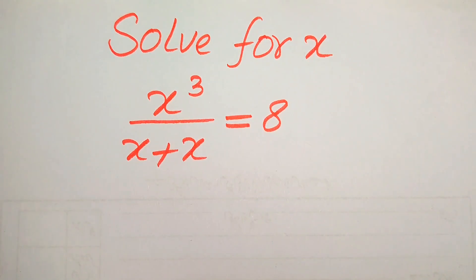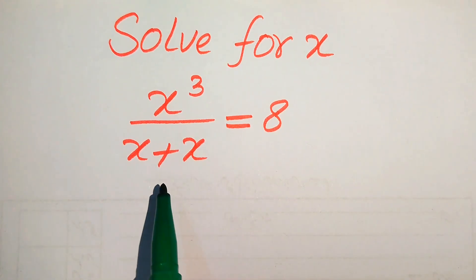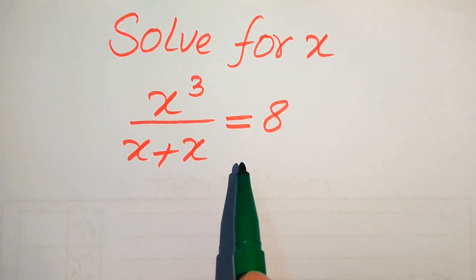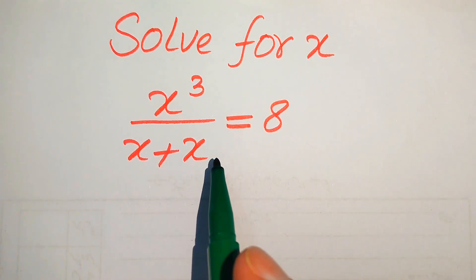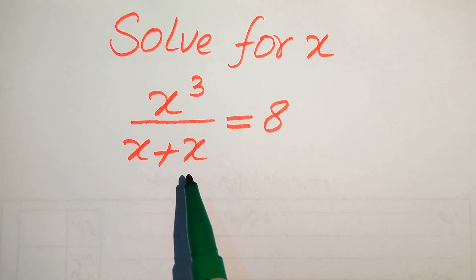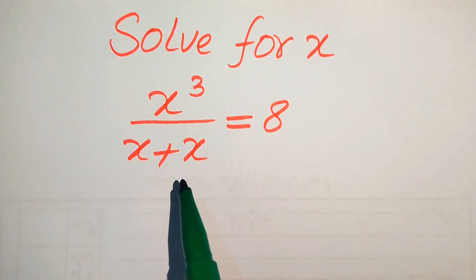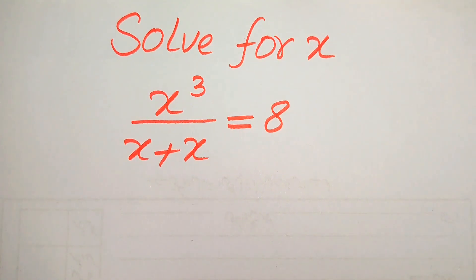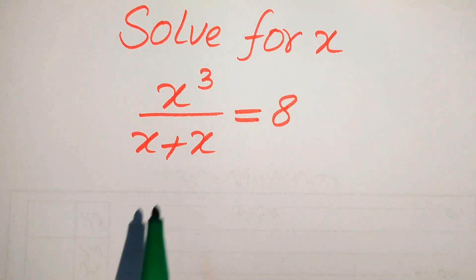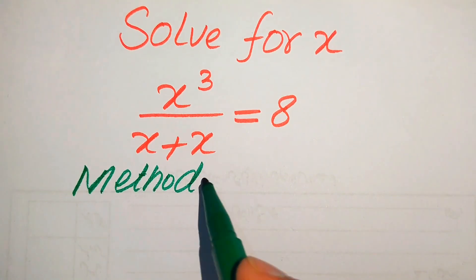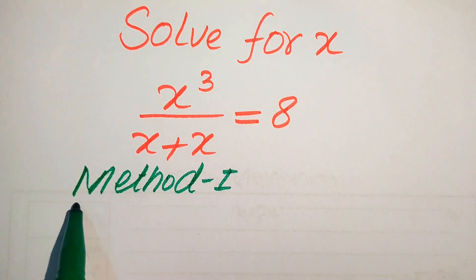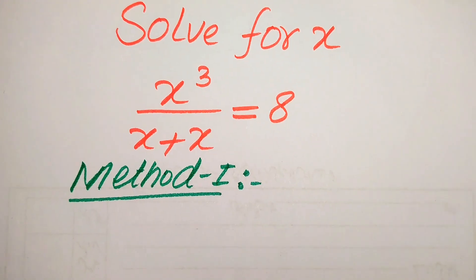Hello everyone, welcome to solve this nice math olympiad algebra problem. We have x cubed divided by x plus x equals 8, and we solve this problem for all values of x. First we find all the roots of this equation, and at the end we will check which roots are solutions and which are extraneous roots. Please watch this video to the end — we also solve this problem using two methods.